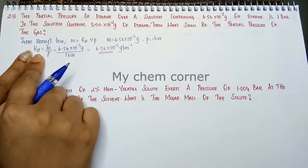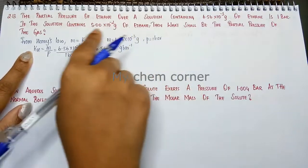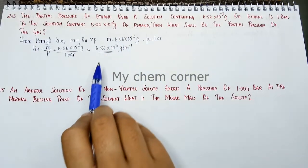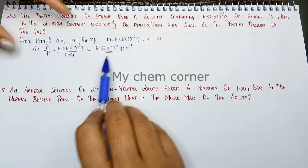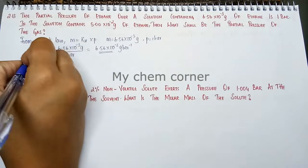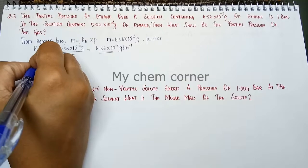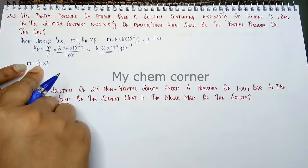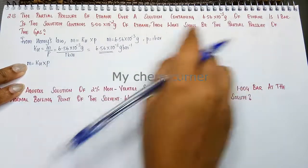Keeping this Henry's constant, we can calculate pressure in the second case. We will write mass is equal to KH into P. So now, we will use Henry's constant to calculate what is pressure.